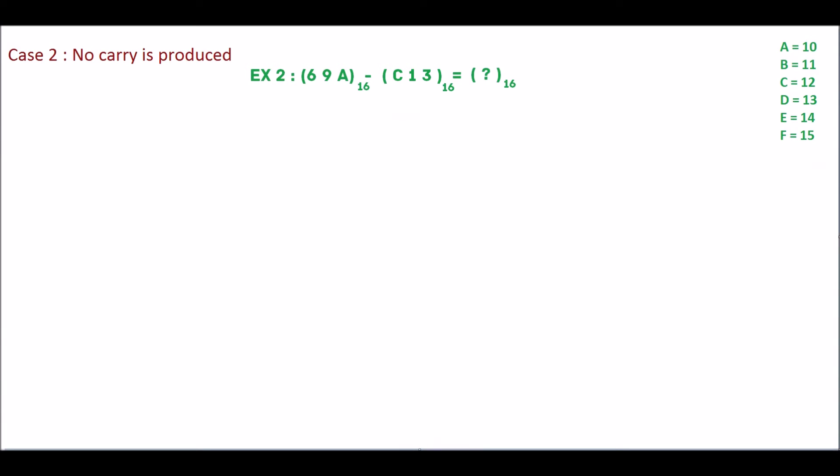Next, we will solve example 2. Assign the numbers as x and y. In step 1, find the 15's complement of y. For this, subtract the digits from 15.